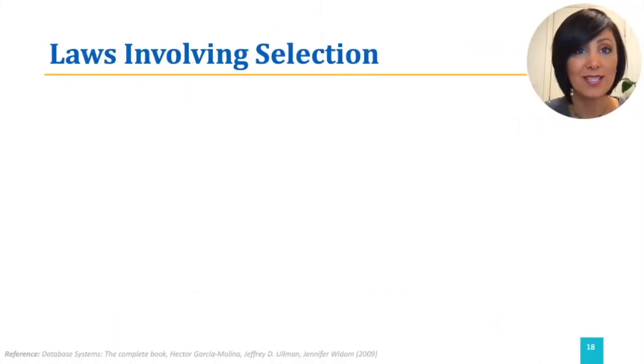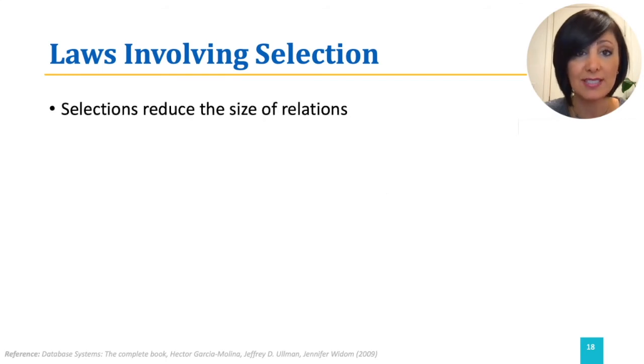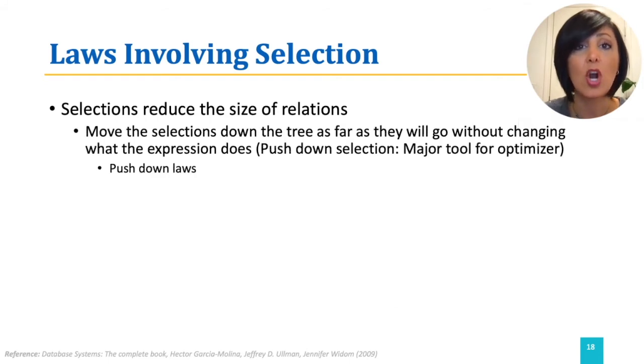Another set of laws are laws involving selections. Laws of selection are important due to the fact that selection decreases the size of the relation remarkably. Moving the selections down the relational algebra tree causes the reduce to happen sooner in the processing. So we want the selection to be moved down as far as they will go. As far as they will go without changing what the expression does.